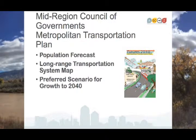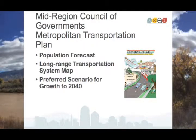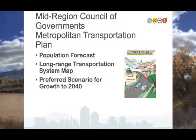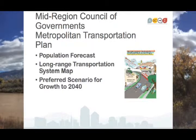In past metropolitan transportation planning efforts, MRCOG has looked at the trends guiding transportation and land use and tried to determine the congestion impacts, air quality impacts, and other factors in how we're growing. For the first time, the region has gone beyond this trends approach to look at other scenarios that could be possible if local jurisdictions pass updates to zoning and other land use policies to get to a better future.